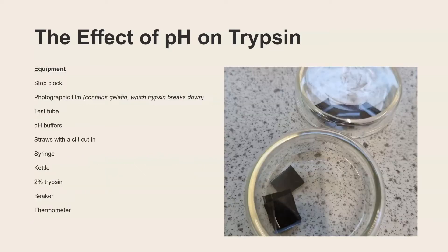Now for this experiment this is the equipment that you will need. So stop clock, photographic film and that is actually the source of the substrate for this experiment because the enzyme trypsin can digest and hydrolyze gelatin. So what we'll see is the photographic film will go from being this black opaque color to colorless and clear. So that's what we're going to be looking at and you've got the rest of the equipment here if you want to pause and write it down.